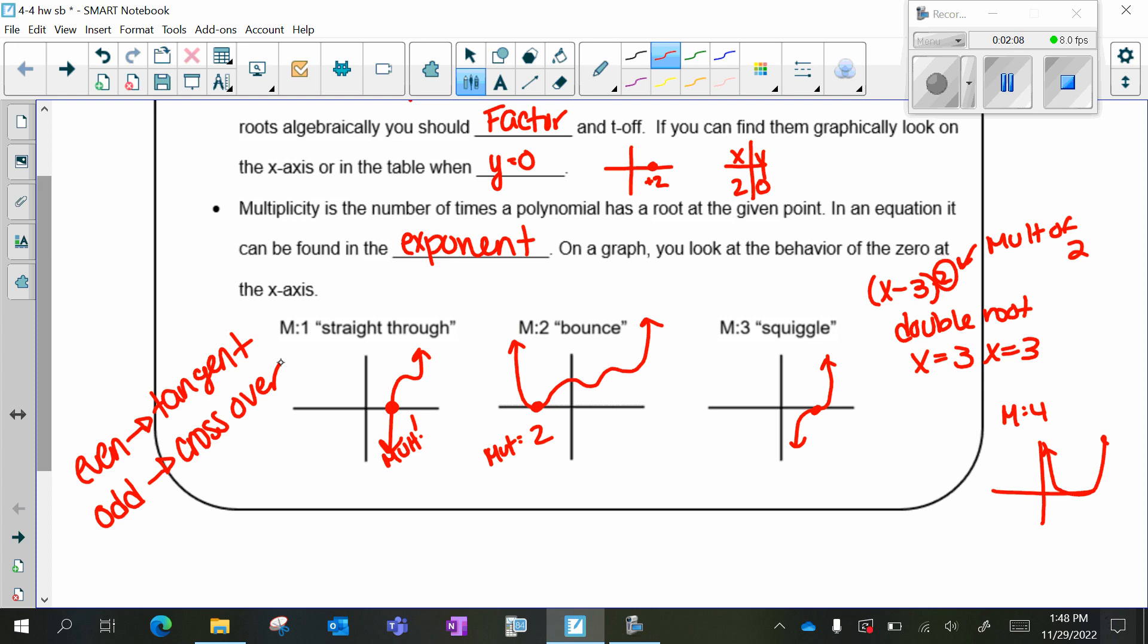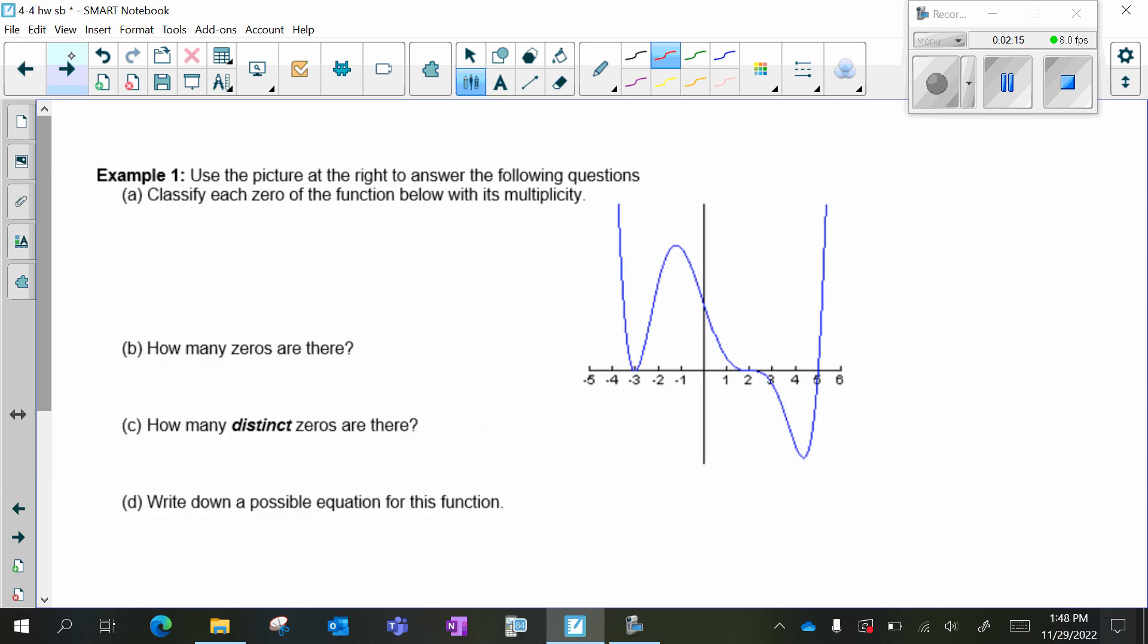We're going to take a look at two different examples. Example 1: Use the picture to the right to answer the following questions. We're going to classify each zero, which remember is an x-intercept, and their multiplicity.